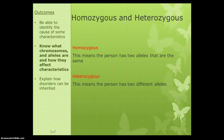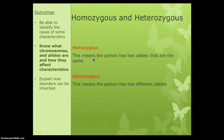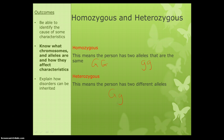We now need to cover homozygous and heterozygous. Homo means the same, so a homozygous person has two alleles that are the same — for example, two capital G's or two lowercase g's. Hetero means different, so heterozygous means that the person has two different alleles, giving a heterozygous genotype.